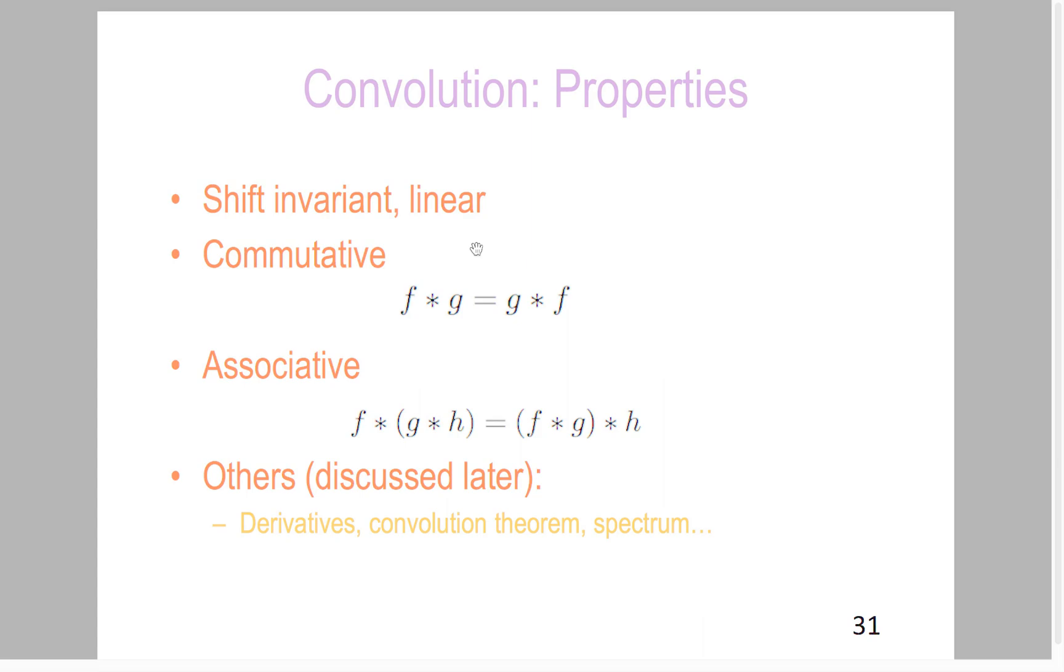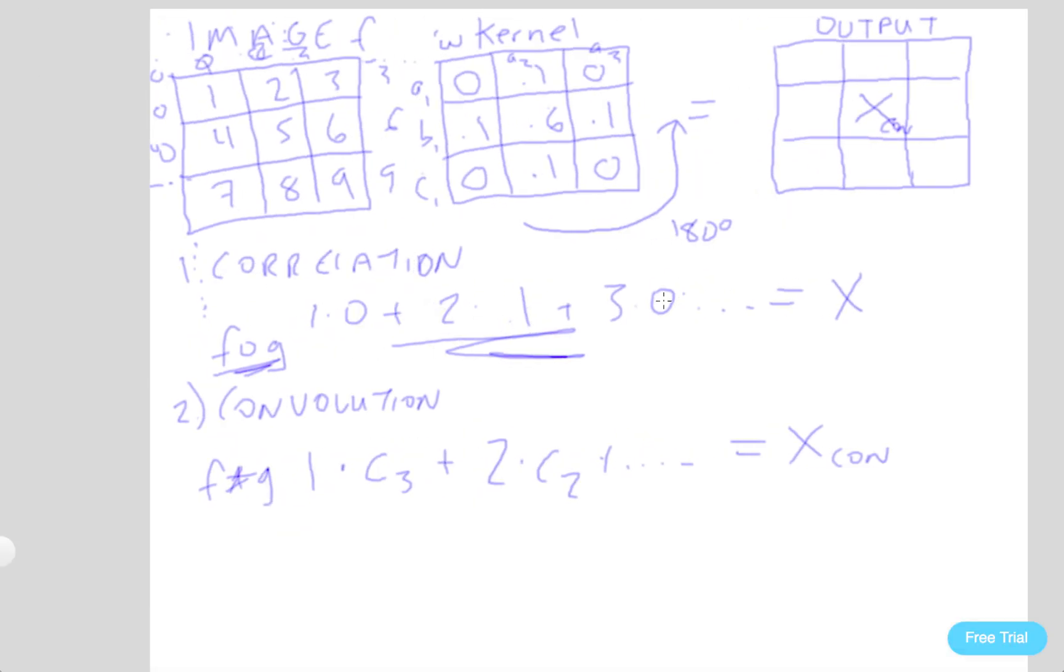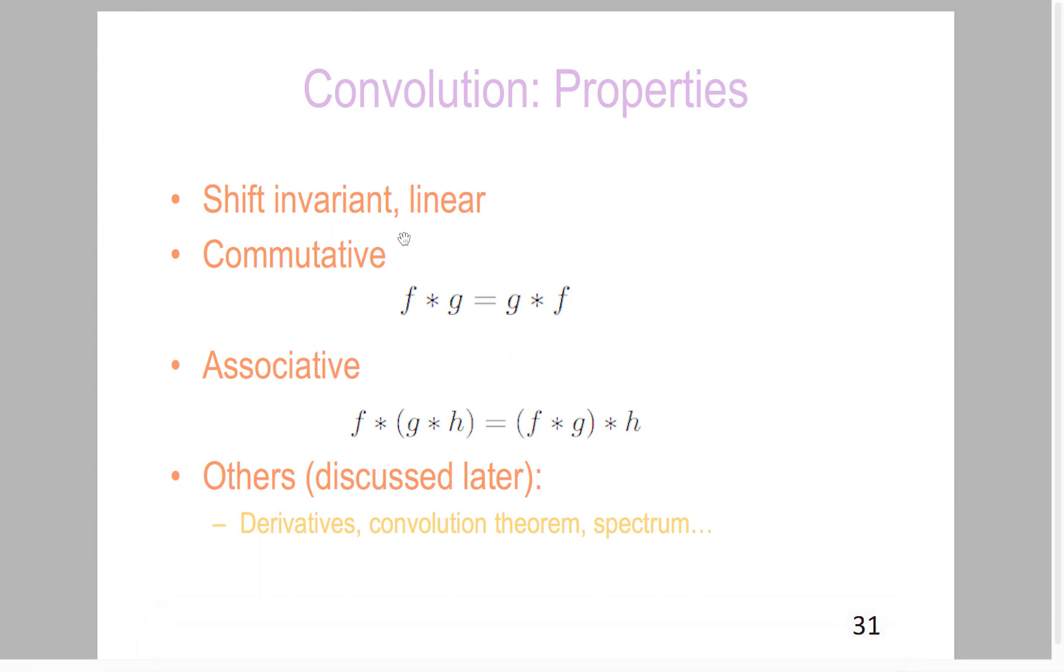Basically, it means it can be shifted and it's linear, there's linear sum. When we add up these functions, it's kind of a linear combination of the previous values. In the convolution case now, it is also commutative and associative.